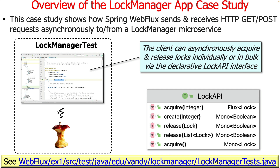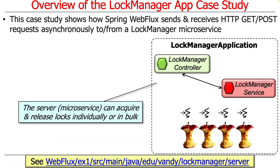The design is very similar to the previous example, except we've changed the types in many cases. In the previous SpringWebMVC example, methods returned Lock or Boolean. Now they return Flux or Mono, which allows the client to be asynchronous and reactive. As before, you can acquire locks either individually or in bulk. The microservice can still acquire and release locks individually or in bulk — that hasn't changed, just the way it's implemented.